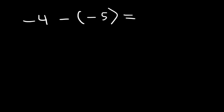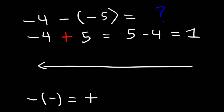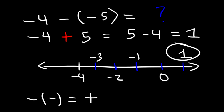Now what if you see an example like negative 4 minus negative 5? Whenever you see two negative signs next to each other, it's equivalent to a positive. So this expression is the same as negative 4 plus 5, which you can rewrite as 5 minus 4, which is 1. Using a number line, we start at negative 4 and add 5 units: 1, 2, 3, 4, 5 — landing on negative 3, negative 2, negative 1, 0, and 1. And that's the answer.